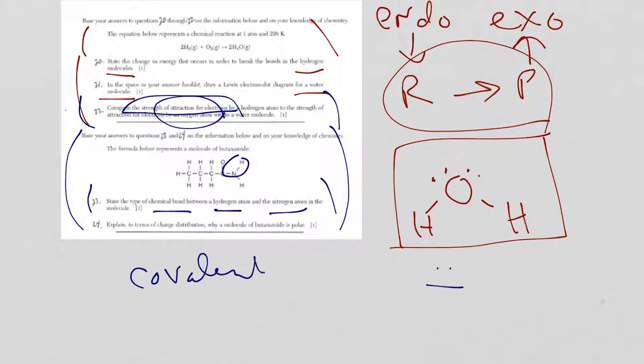But more than that, it is a polar covalent bond. Because the two nonmetals are not the same. Finally, in 24, it says... Let me erase this. Explain in terms of charge distribution why a molecule of this, which I don't say very well, butanamide... I don't think I really said it great... is polar. Well, it's polar because there is an asymmetrical distribution of charge.